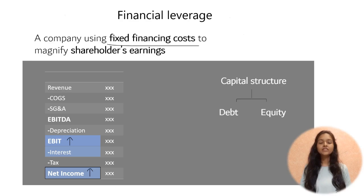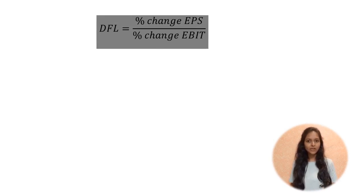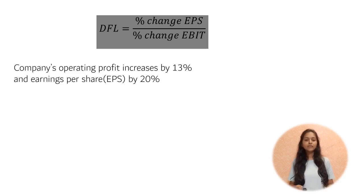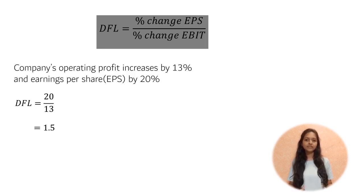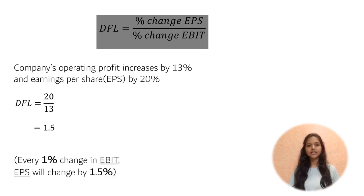We just saw how net income increased because of the increase in EBIT. The relationship between these two is explained by the degree of financial leverage, which measures how sensitive a company's net income is to a change in EBIT. It is calculated as: percentage change in earnings per share divided by percentage change in EBIT. For example, if operating profit increases by 13% and EPS increases by 20%, the degree of financial leverage comes out to 1.5 — meaning for every 1% change in EBIT, EPS will change by 1.5%.